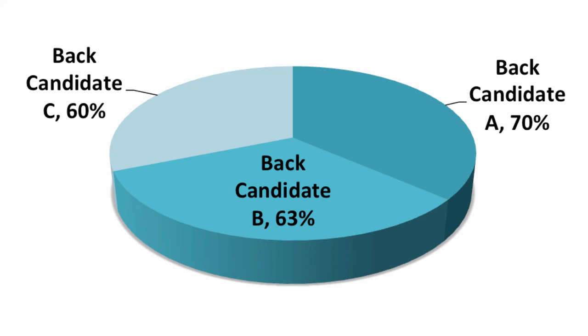For example, candidate B's slice is at the bottom of the chart, and the thickness of the pie contributes to the perception that their slice is larger than candidate A's, even though 63% is less than 70%. Also, it looks much larger than candidate C's, even though it's only a little bit bigger. Both of these practices should be avoided. And given the problems with pie charts, it's usually best to ignore them completely.